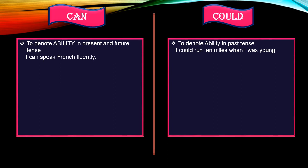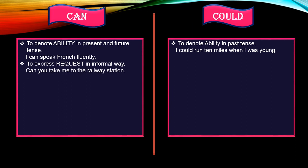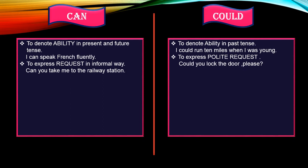Can is used to express a request in an informal or casual way. For example: 'Can you take me to the railway station?' Could is used to express a polite request. For example: 'Could you lock the door, please?' — using 'please' at the end makes it the most polite form of request.